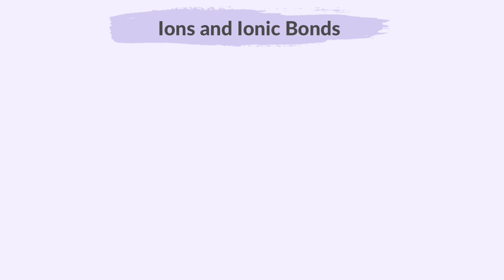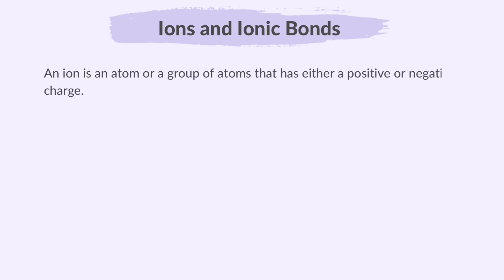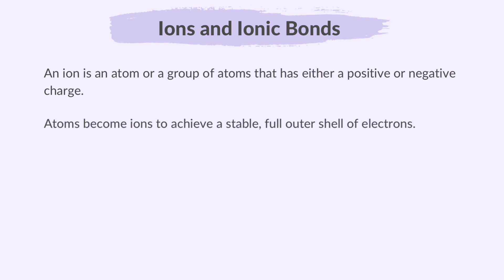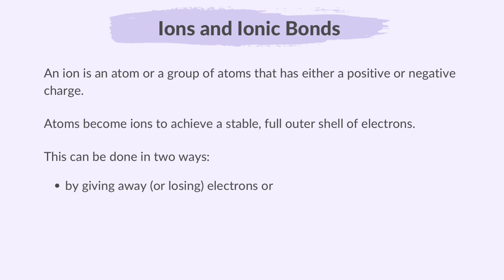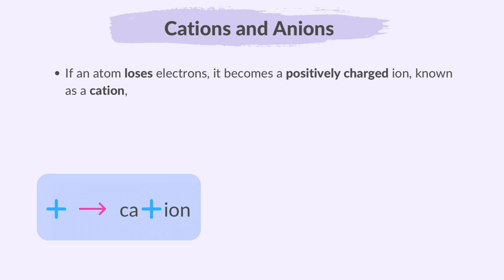Our first topic of discussion is ions and ionic bonds. An ion is an atom or a group of atoms that has either a positive or negative charge. Remember, atoms become ions to achieve a stable, full outer shell of electrons. This can be done in two ways: by giving away or losing electrons, or by taking in electrons. If it loses electrons, it becomes positively charged, known as a cation.